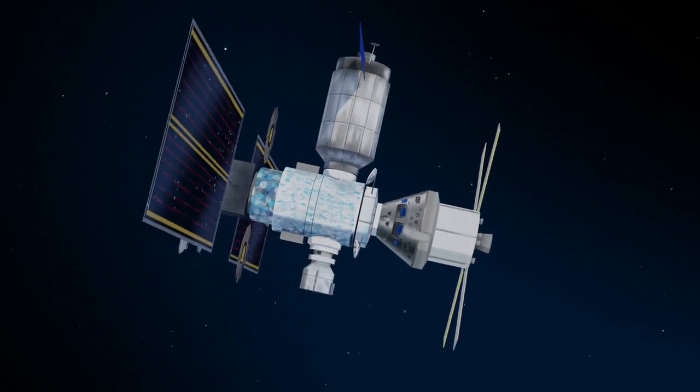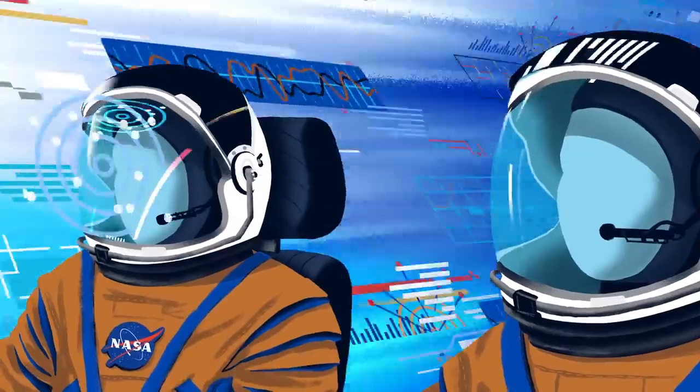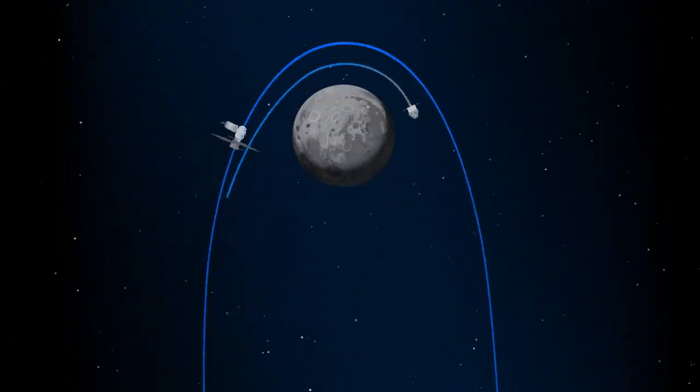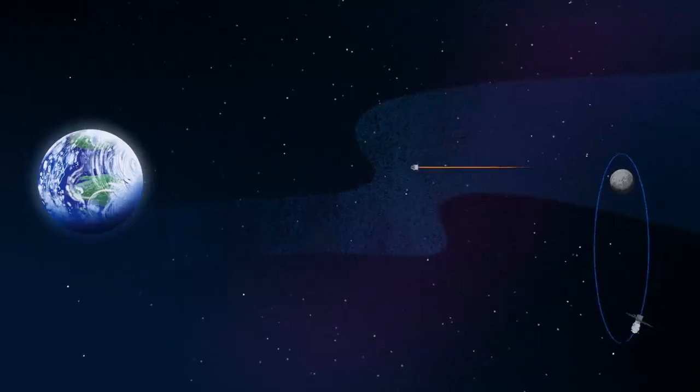Once back aboard the Orion spacecraft and undocked from Gateway, the crew fire their engine once to break out of the halo orbit, and once again to sling the spacecraft around the Moon, placing it on a multi-day trajectory back towards Earth.